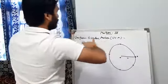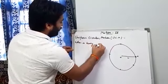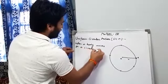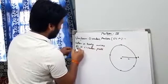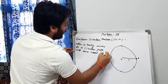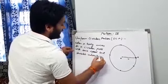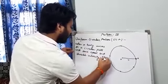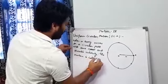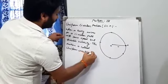So, uniform circular motion is what? When a body moves on a circular path with same speed but variable velocity. This motion is called uniform circular motion.